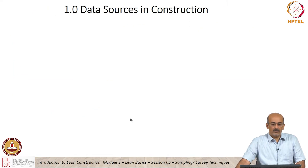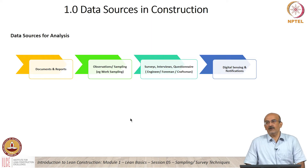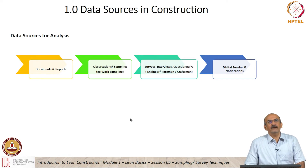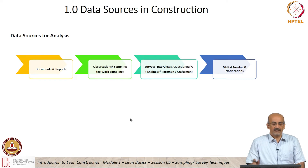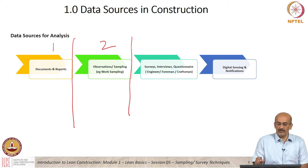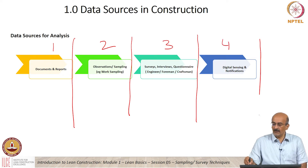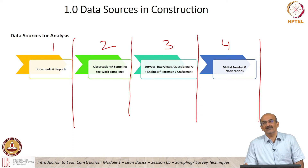Now let us go to data sources and construction. If we look at a construction site and I need to understand or analyze what is happening, there are different sources I can get information or data from. We have listed the classic sources here. Number one is documents and reports, two is observation-based reports, three is surveys, and four — which is kind of a novel approach today — is digital.